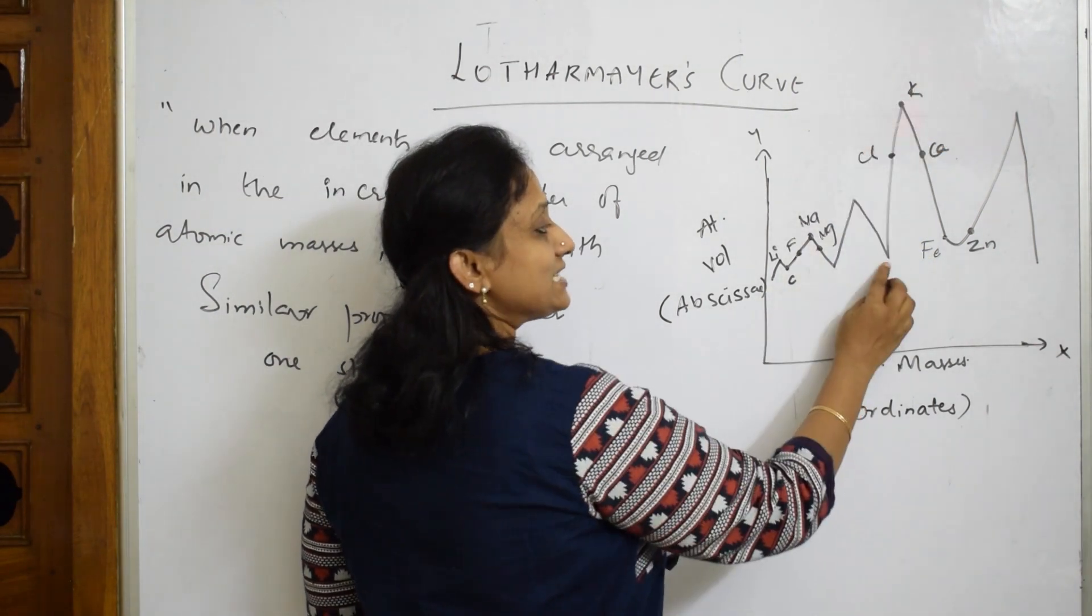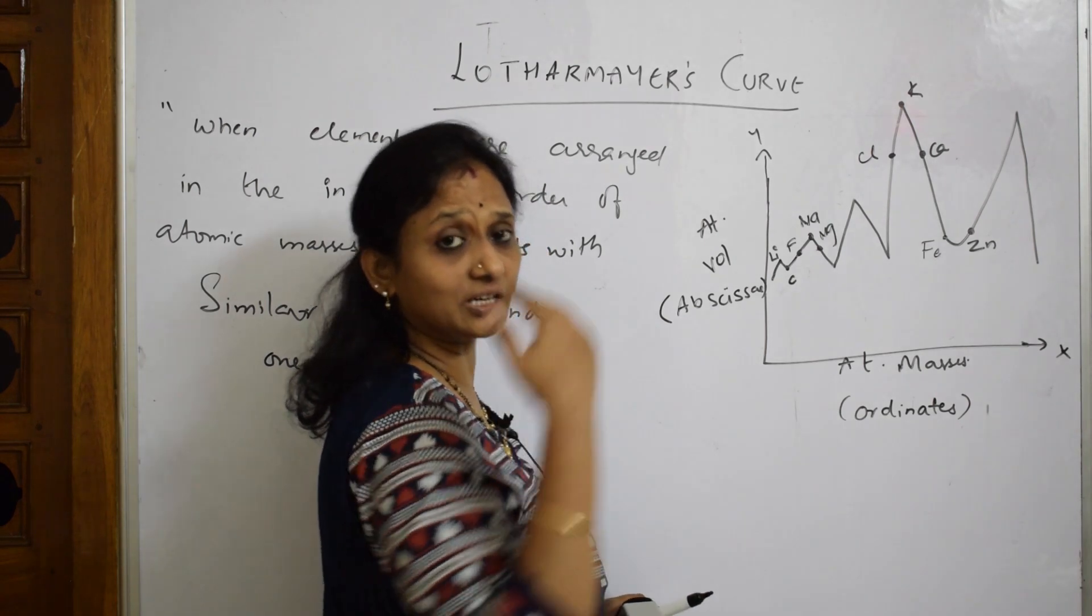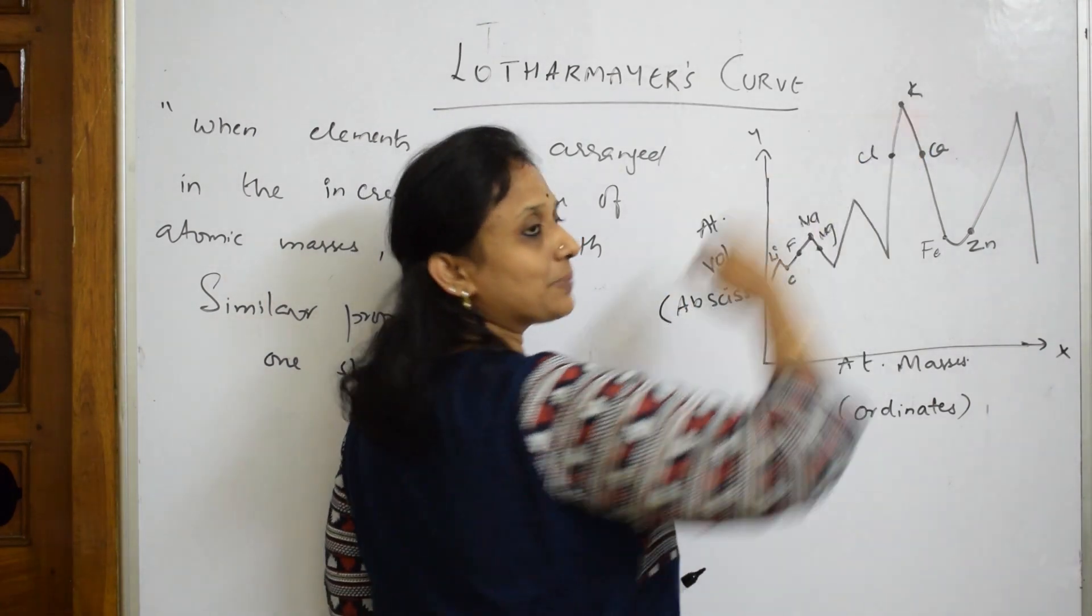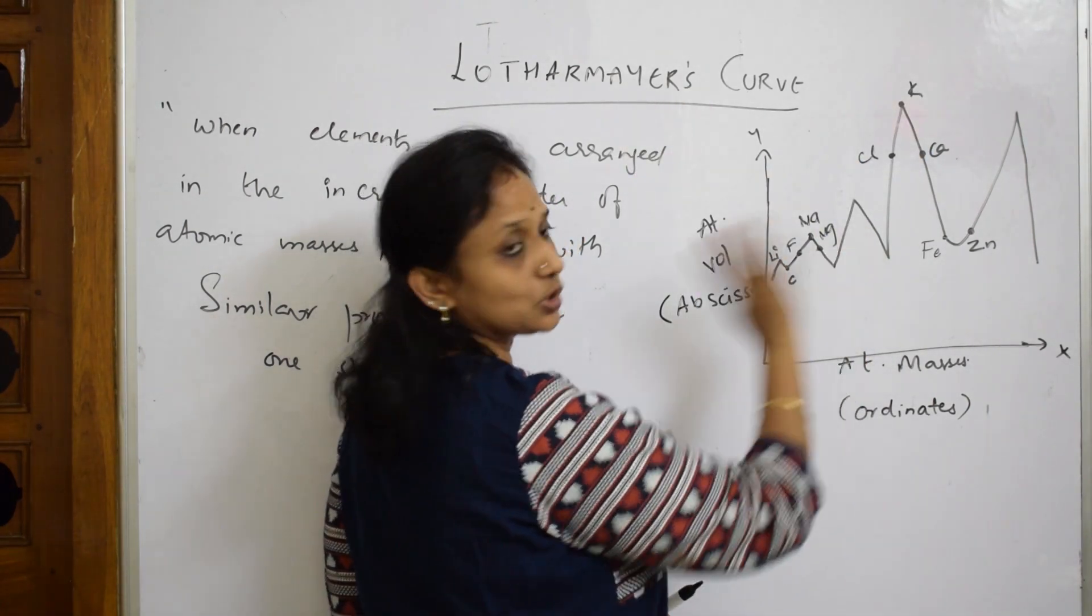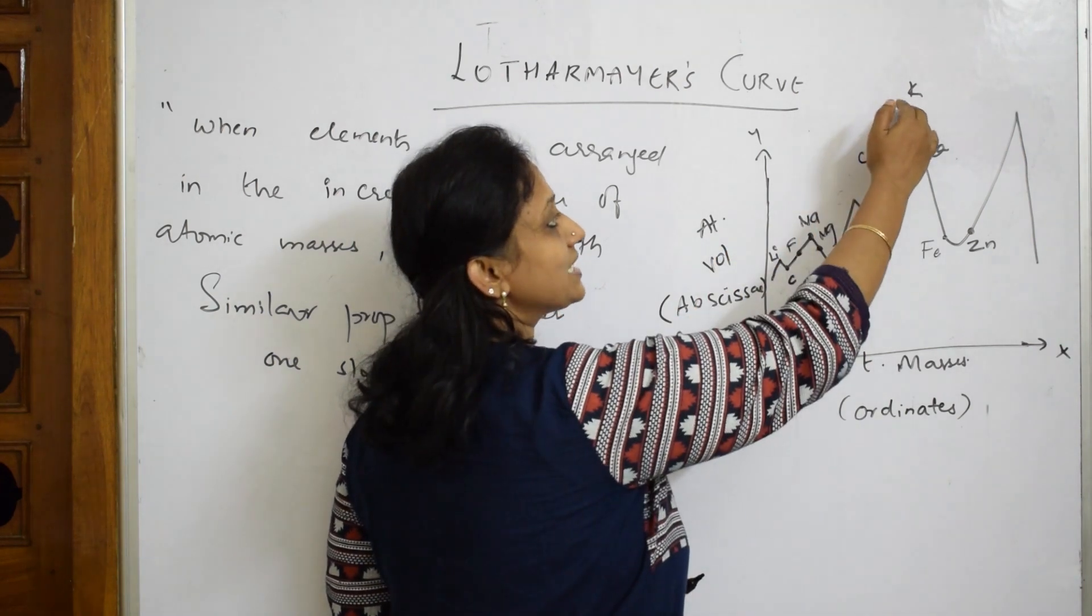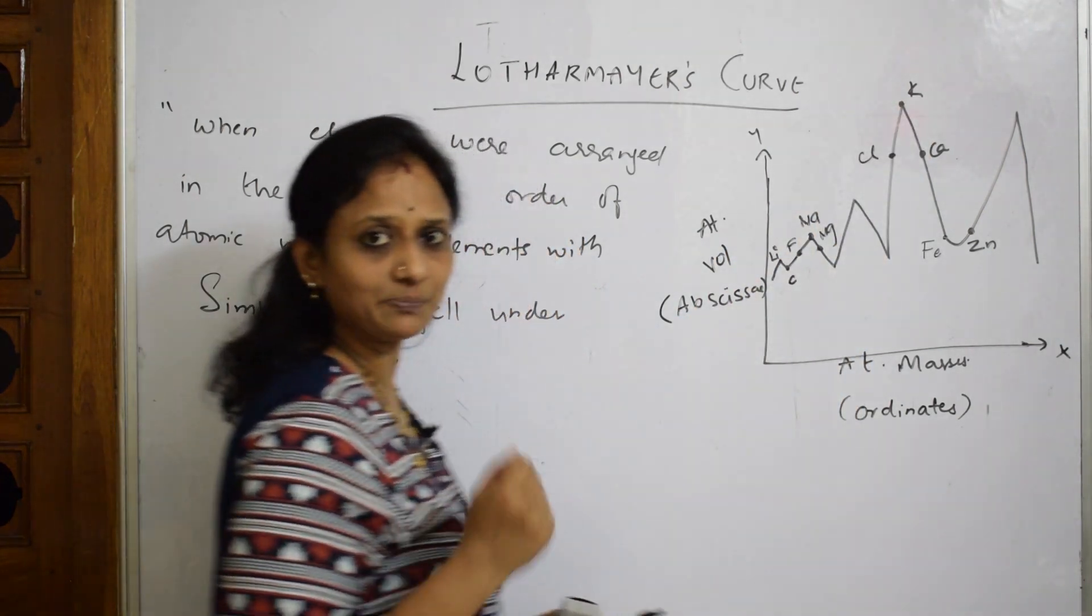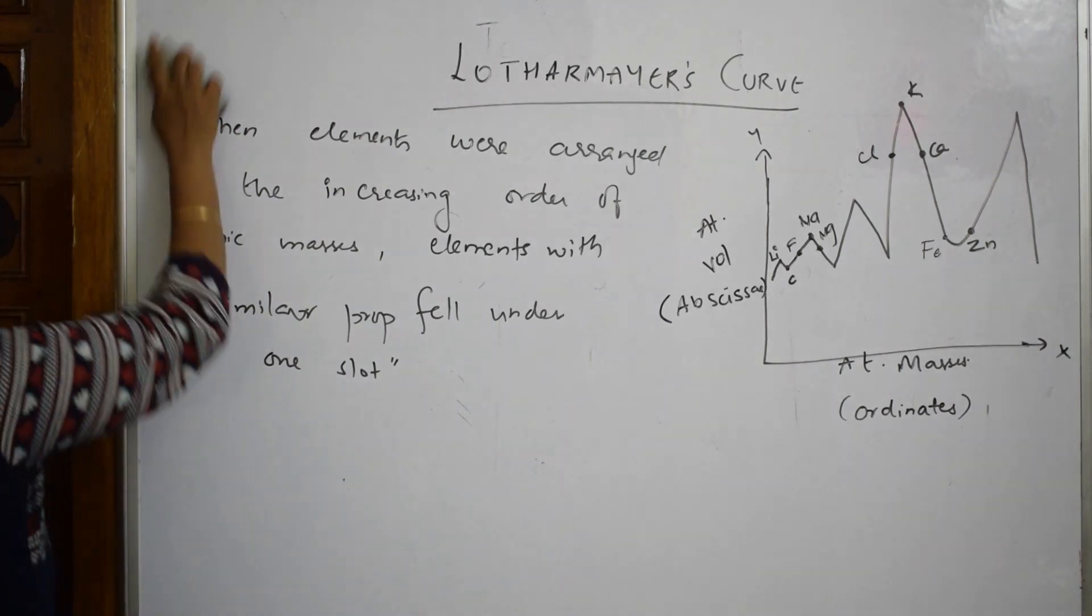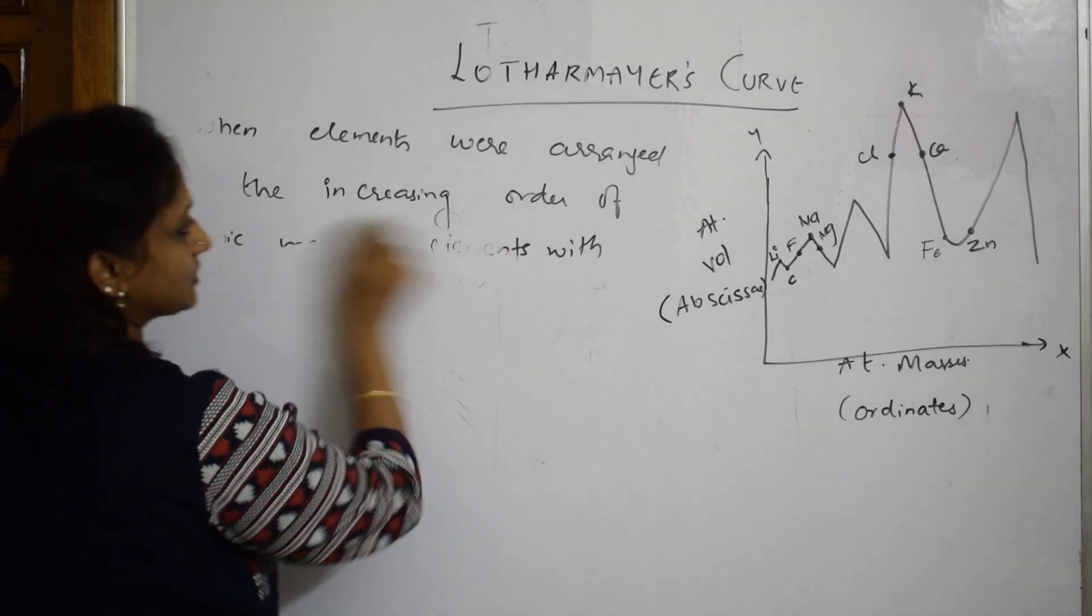One is the peak, one is the trough, means the depth, the crest and the trough. This is the crest part, the higher part, and the trough, which is the lower part. You can say peaks as well as troughs, the depth part. What he said is, what his observations, let us write one after the other.